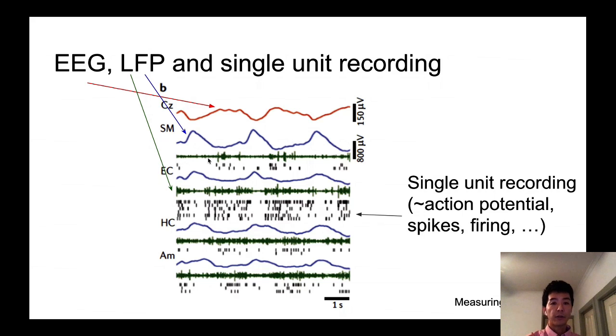And then the green signal, green line is also corresponding to the local field potential. But here we are looking at the component that changes very, very quickly, so-called high-pass filtering.